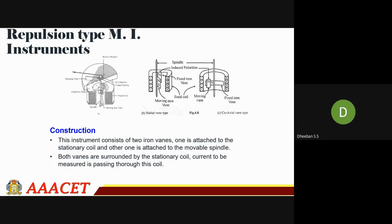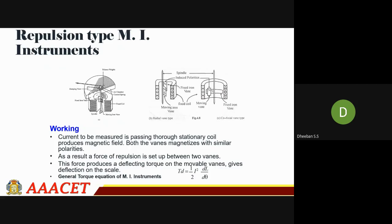Coming to the repulsion type, the working principle varies slightly. The instrument consists of two iron vanes. One vane is attached to the stationary coil and the other is attached to the movable spindle. Here you can see the fixed iron vane and the damping vane. Both vanes are surrounded by the stationary coils and the current to be measured is passed through the coil.